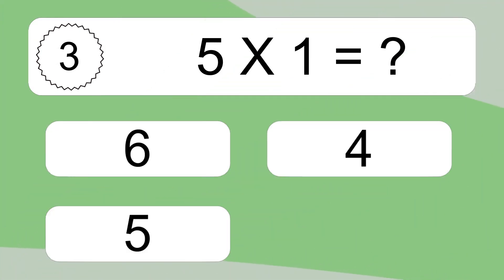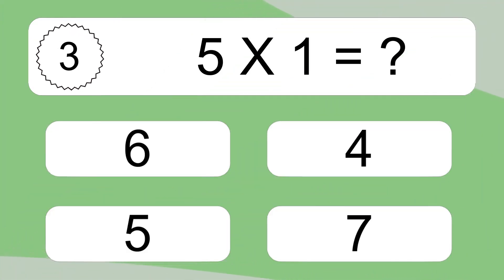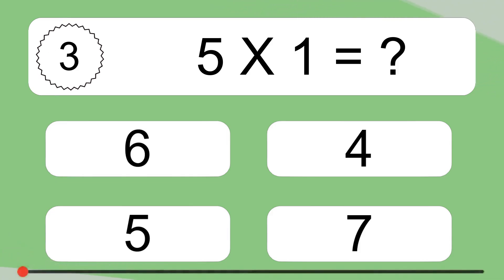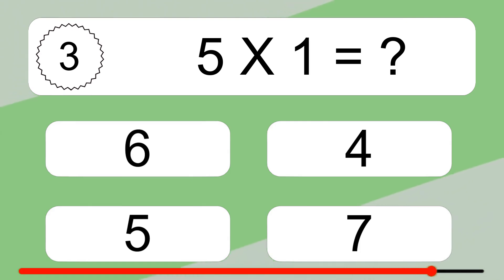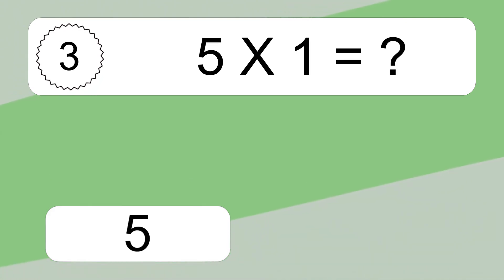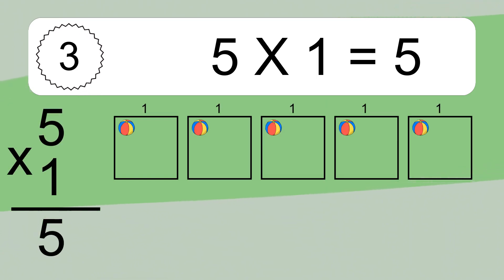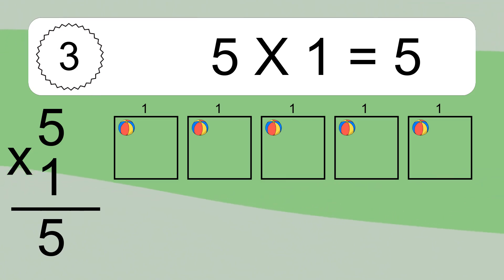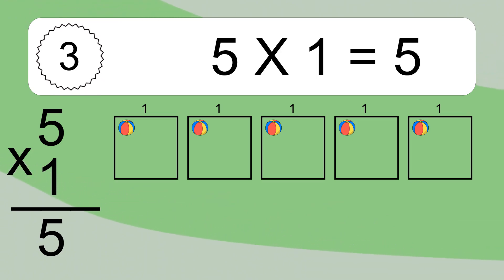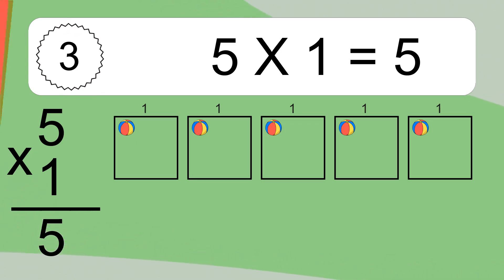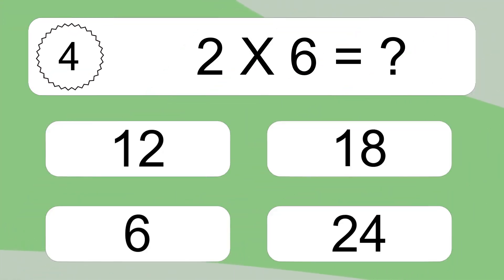5 times 1 equals what? 5 times 1 equals 5. We have 5 boxes, and each box has 1 colorful ball inside. If you count all the balls in all the boxes together, you will have 5 times 1 balls. This equals 5 balls.